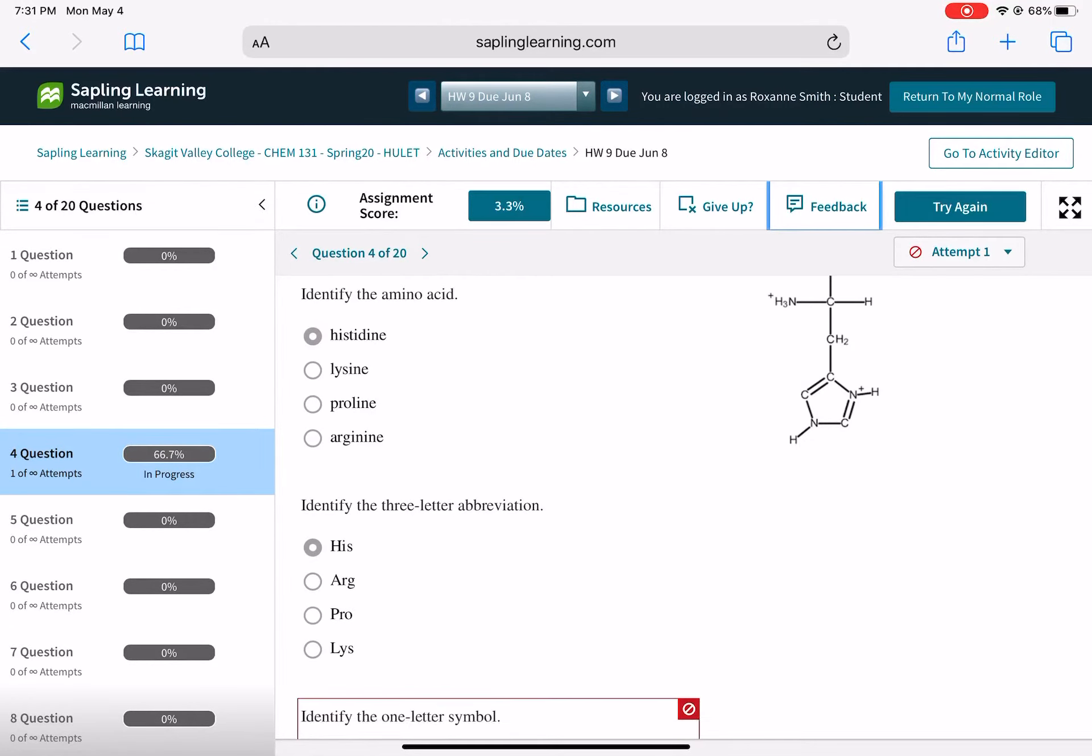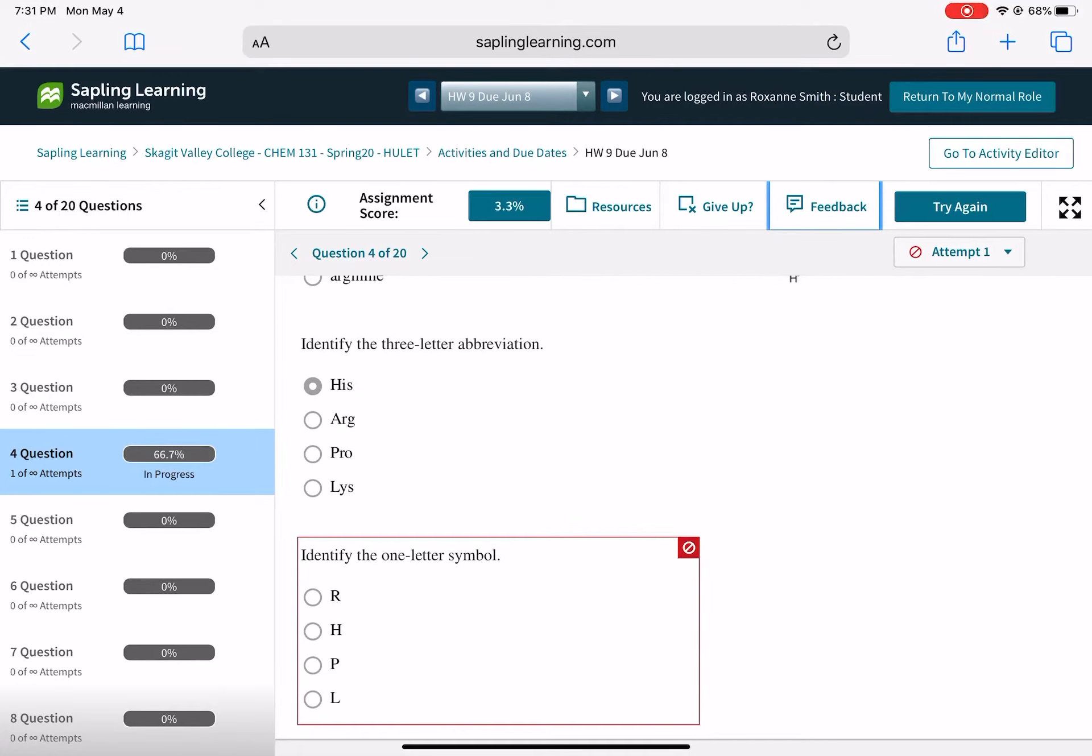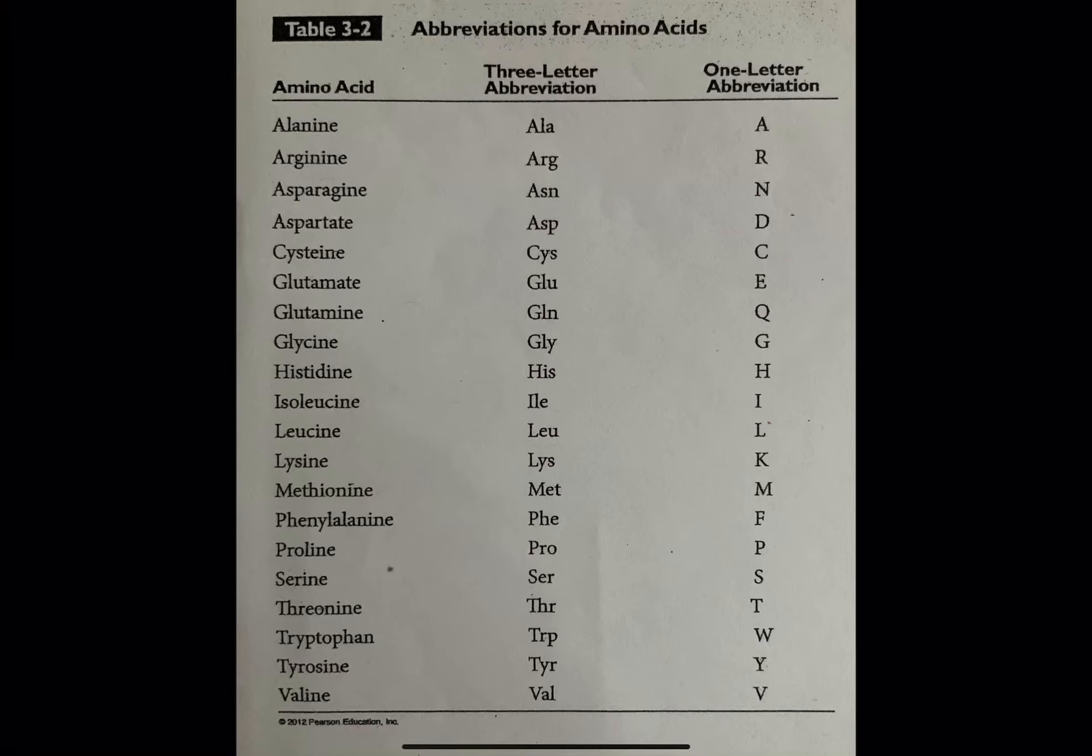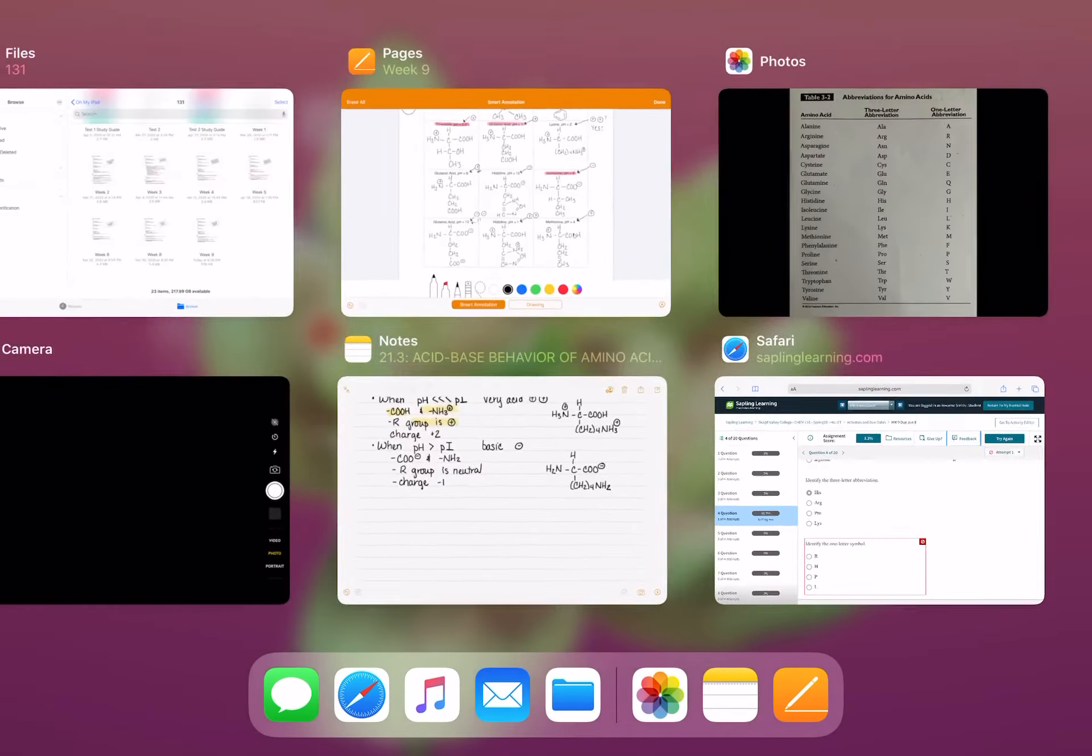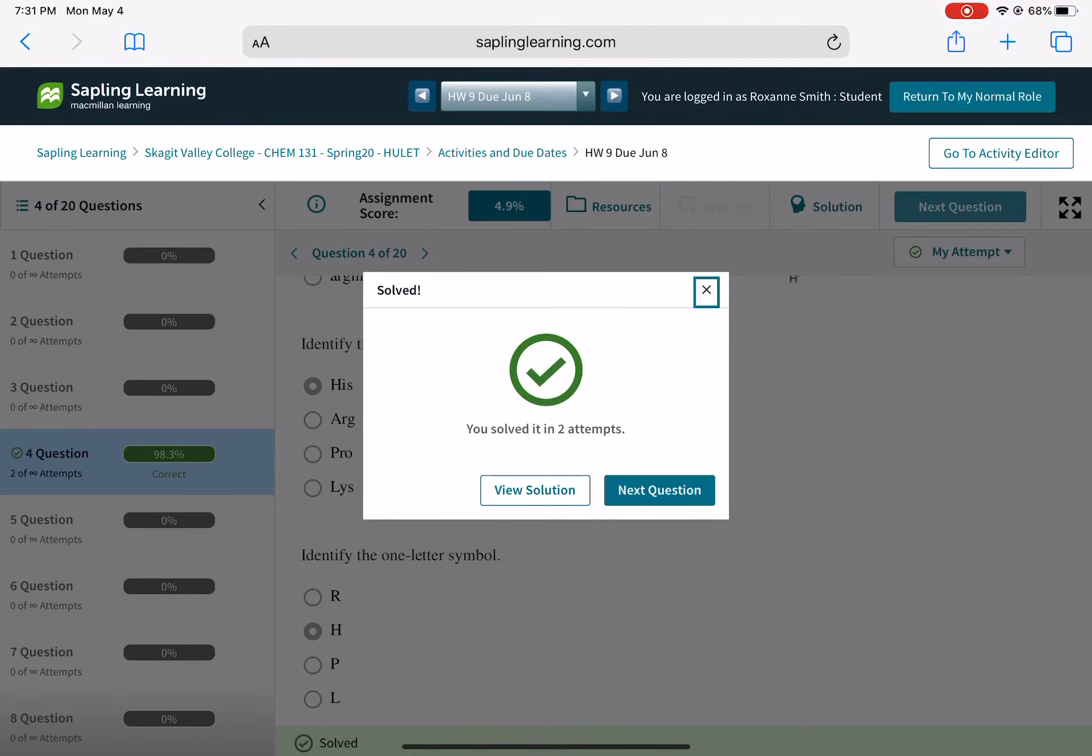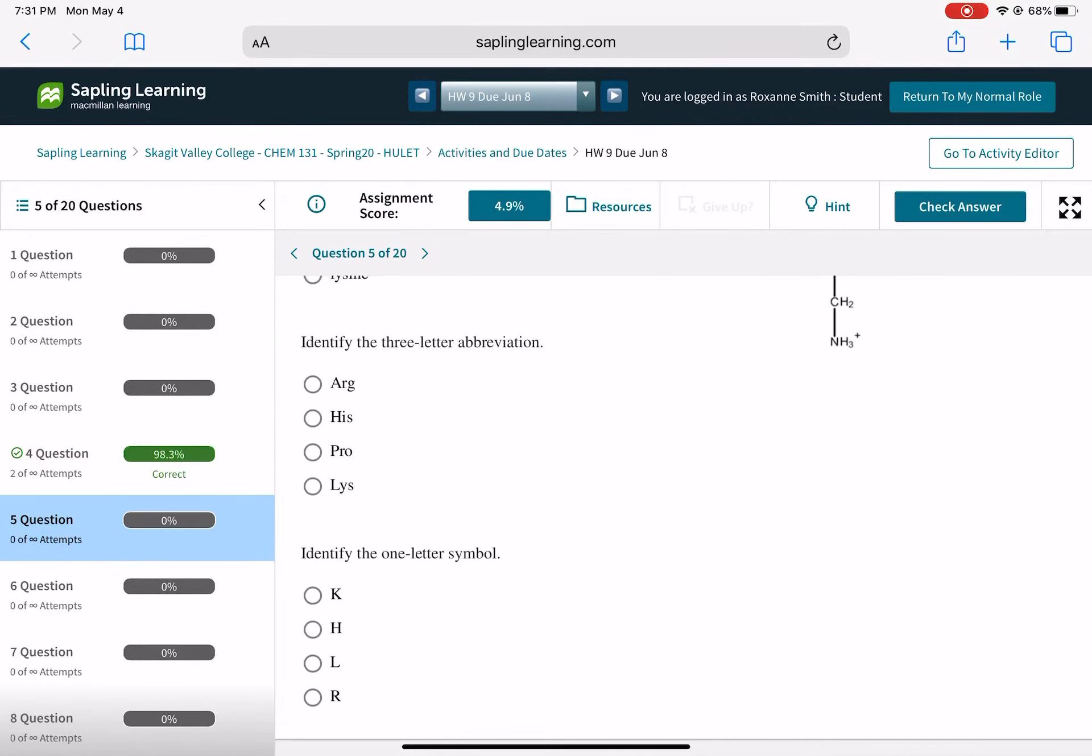Oh, apparently, oh, I didn't scroll down. There's more. The one-letter symbol for histidine. The one-letter symbol for histidine is H. Oh, now you know to scroll down. I'm guessing that all those problems have that same thing. Scroll down.